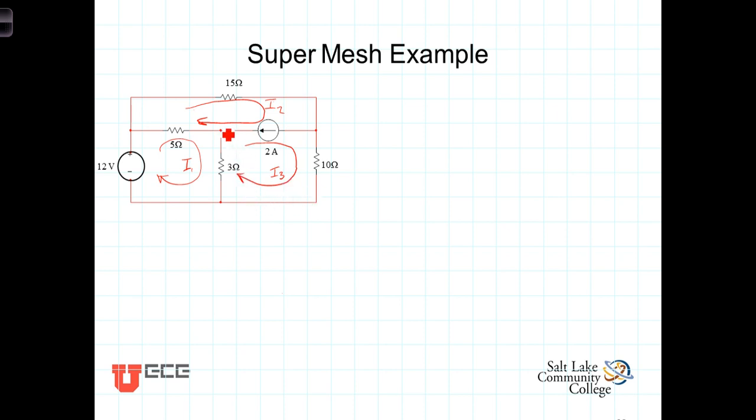That will then require us to do a super mesh, which we will be writing around there. Let's get started first of all by writing the mesh current equation around this mesh number 1. Starting down here in the lower left-hand corner, we have going minus to plus, that will be a negative 12 volts. And then across this 5 ohm resistor, we'll have a voltage drop of 5.